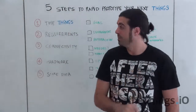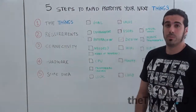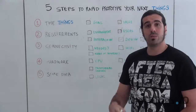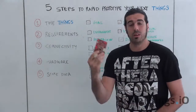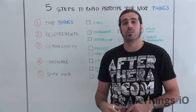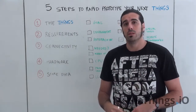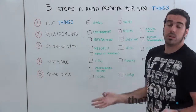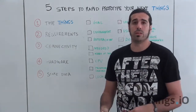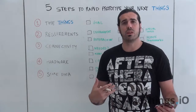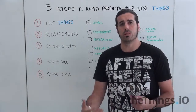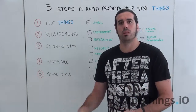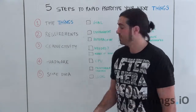The third step is connectivity. My first question is: do you need connectivity? Does your thing need to be connected to the internet? If yes, we go further. But if you only need local light or physical interactions in the space where your thing lives, maybe you don't need an internet connection at all.